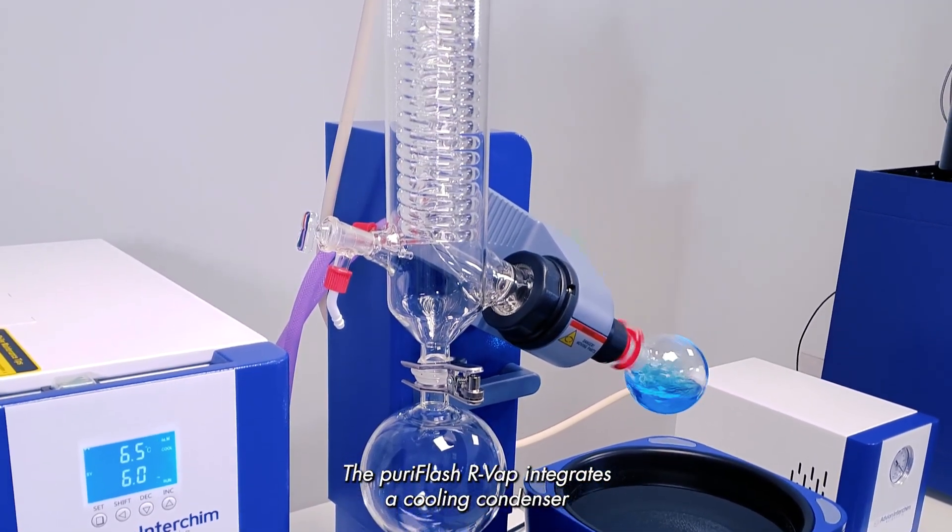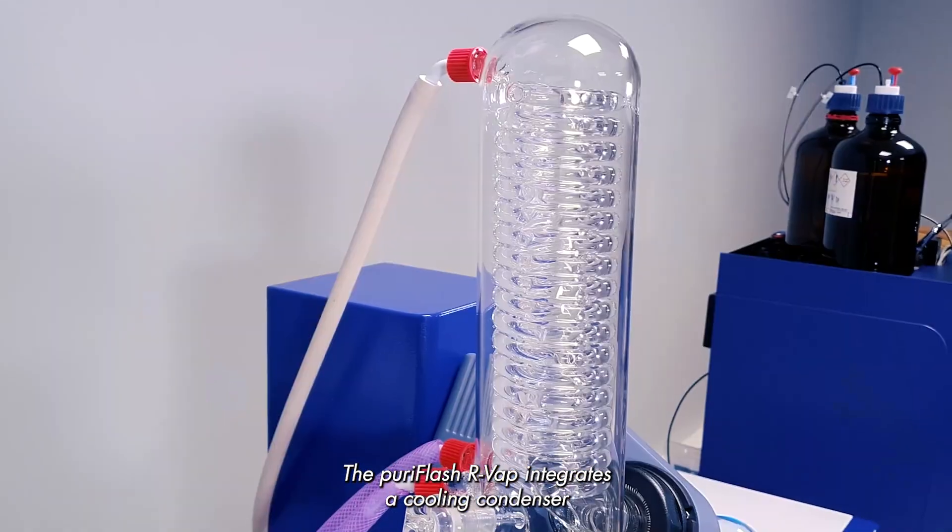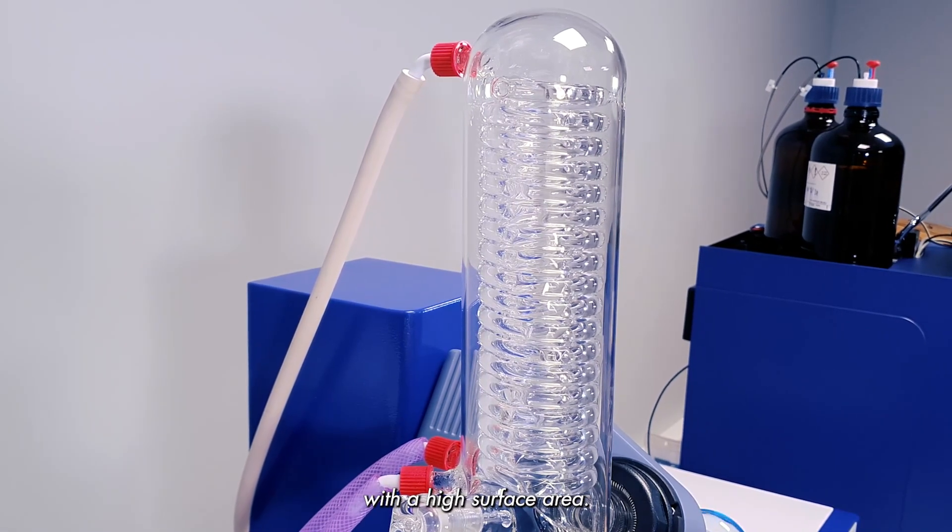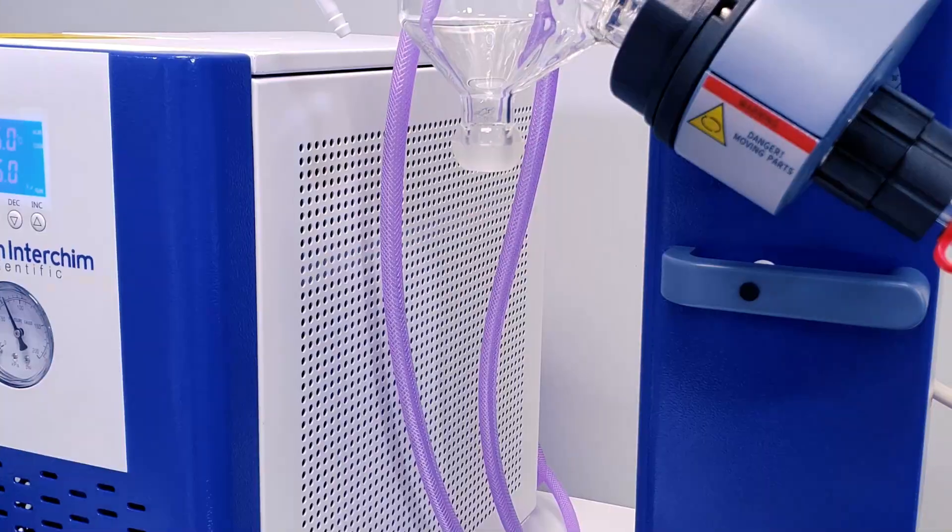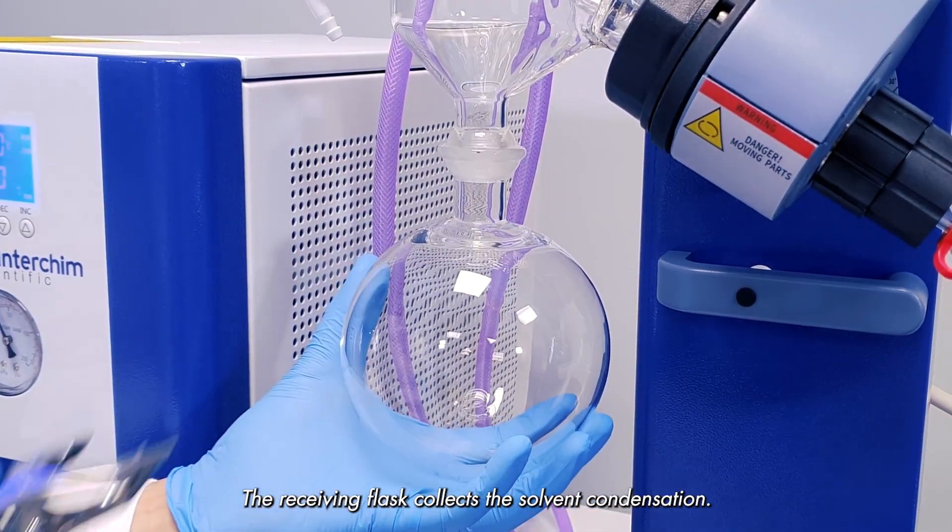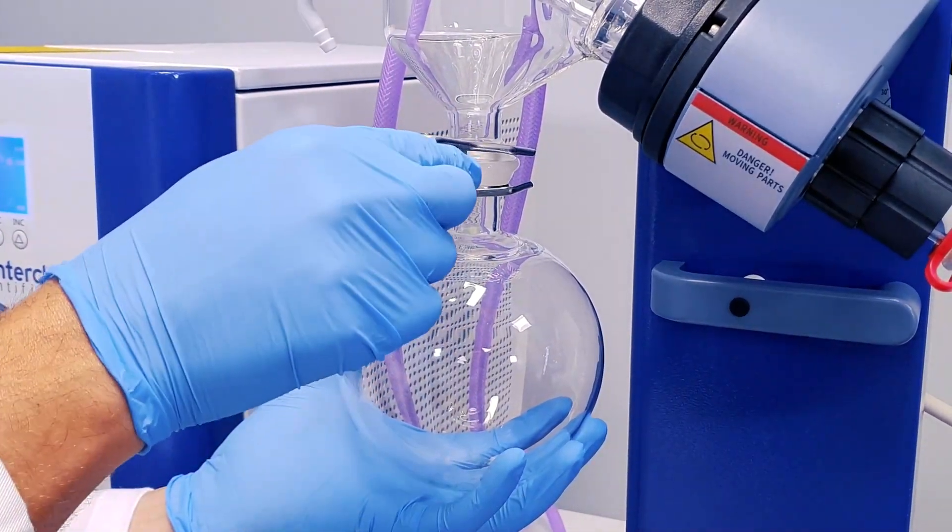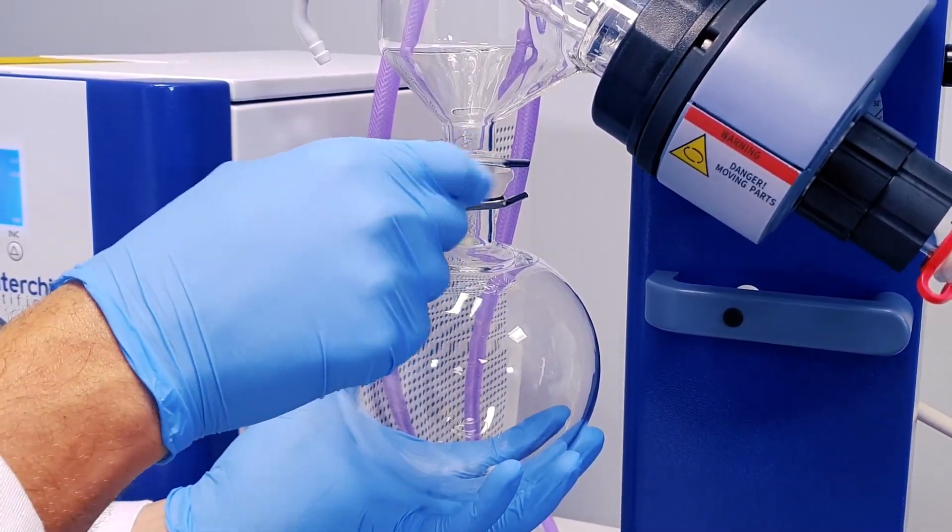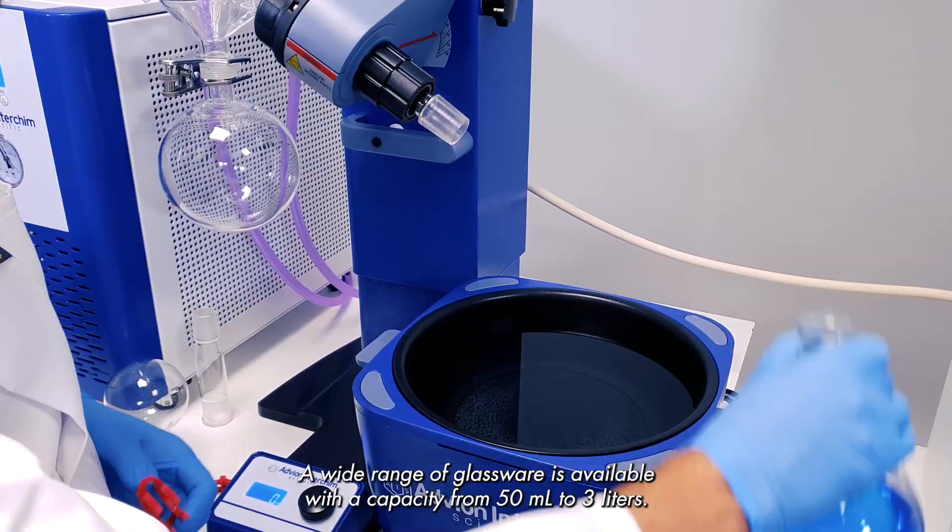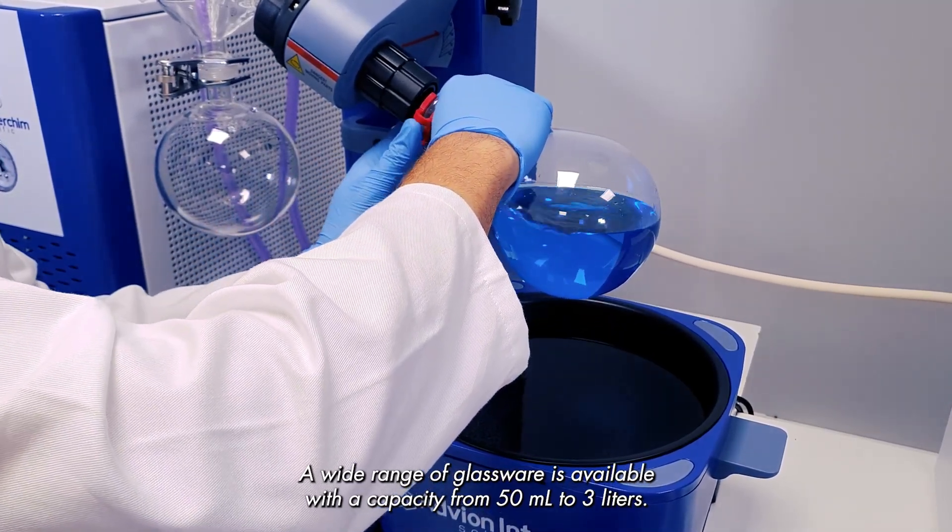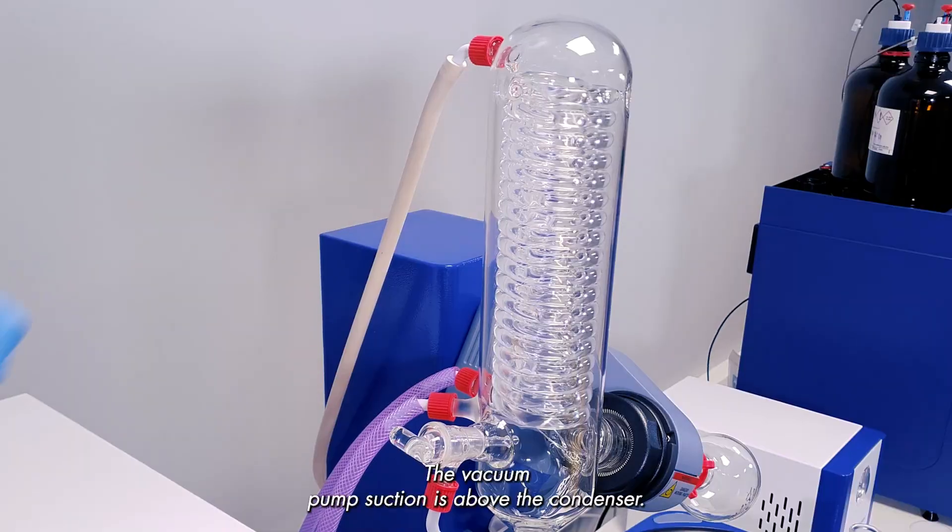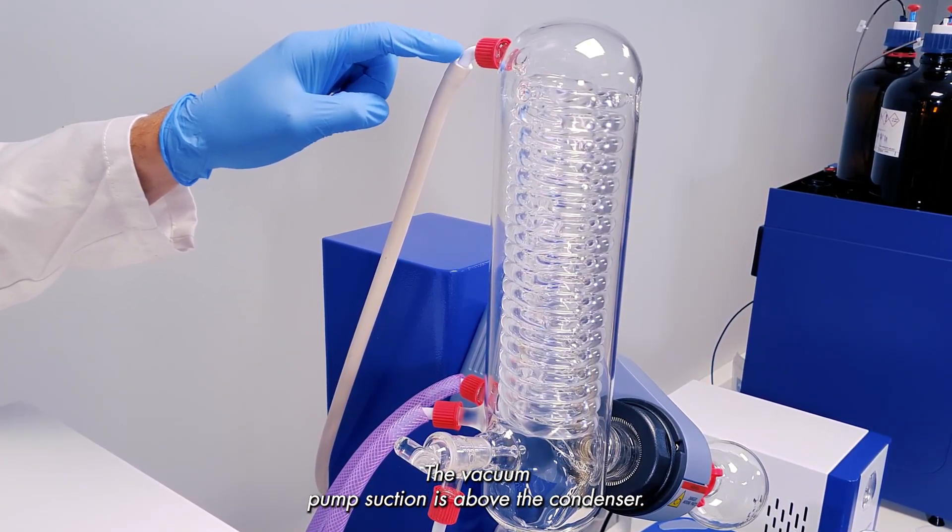The Puriflash RVAP integrates a cooling condenser with a high surface area. We have an online sample introduction valve. The receiving flask collects the solvent condensation. A wide range of glassware is available with a capacity of 50 ml to 3 litres. The vacuum pump suction is above the condenser.